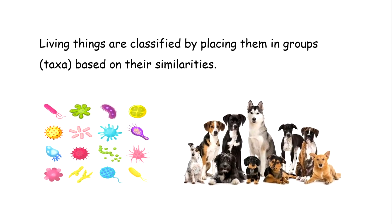Living things are classified by placing them into groups which are called taxa, and they are placed into these groups based on similarities. So for example, dogs are placed in groups because they share similar characteristics or features, such as fur and being mammals.